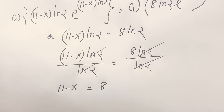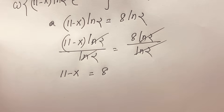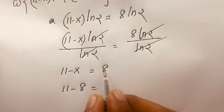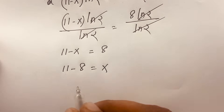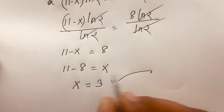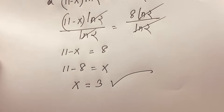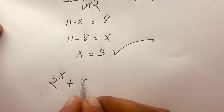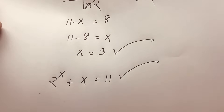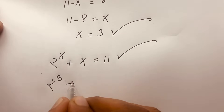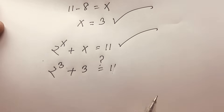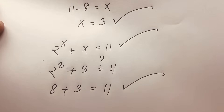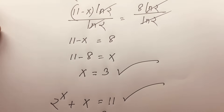So x equals 11 minus 8, which is 3. Our final answer is x equal to 3. Verifying: our original question is 2 to the power x plus x equals 11. With x equals 3: 2 to the power 3 plus 3 equals 8 plus 3 equals 11. Left-hand side equals right-hand side. Thank you all — if you enjoyed this video, please subscribe to our channel for another interesting video. Goodbye, take care.